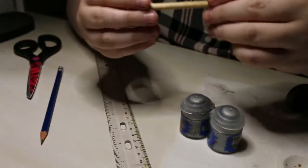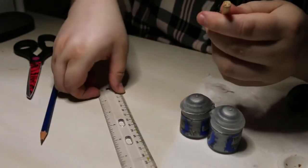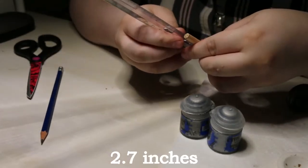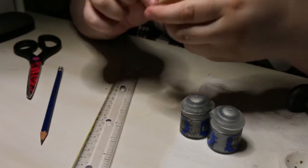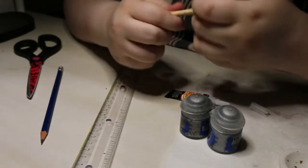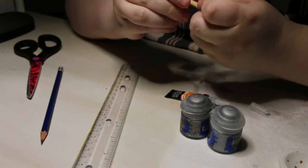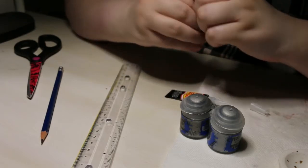I have already gone ahead and cut my dowel piece two and seven-eighths inches long. Now I'm going to take the wheels and see which side fits best. You're going to want to select the side that is not the tightest because we're going to be painting it, so you want to leave a little bit of room.